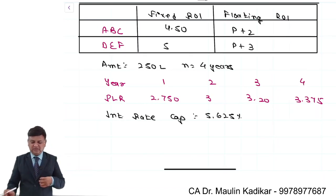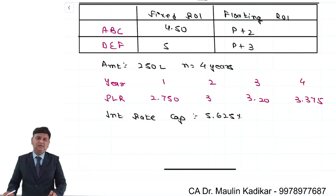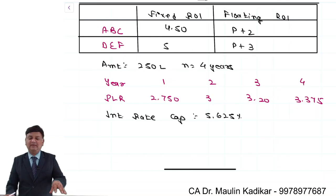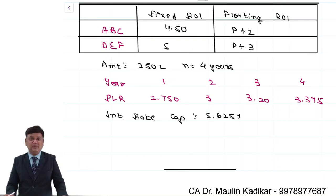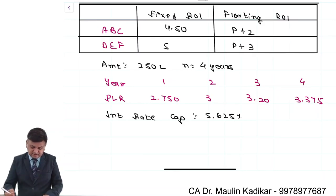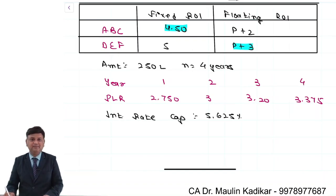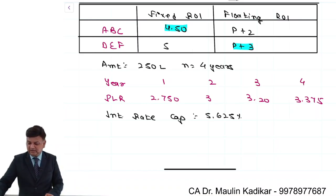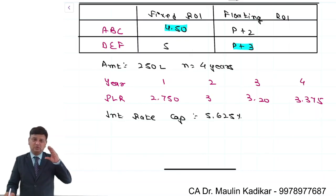Let us have an understanding of this question — an excellent question in my opinion. Over here there are three concepts which have merged. Whenever this kind of question is there, you should be able to apply all these concepts together. The first concept you must have understood is the swap transaction. Information is provided that ABC Limited wants to borrow at the fixed rate, and DEF wants to take the loan at the floating rate.